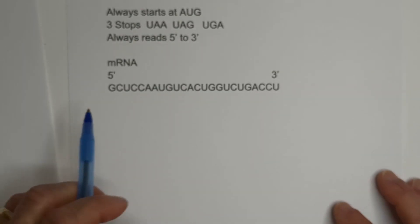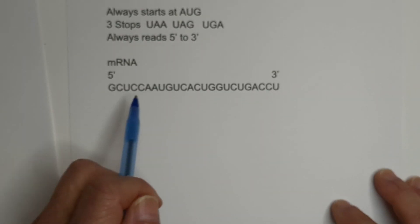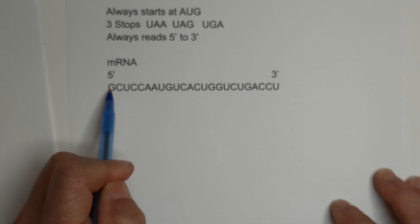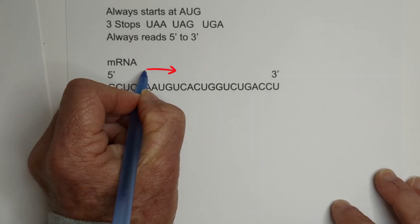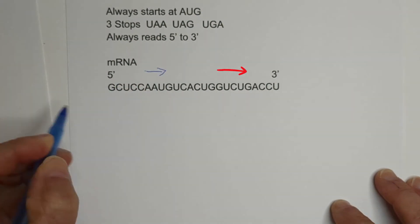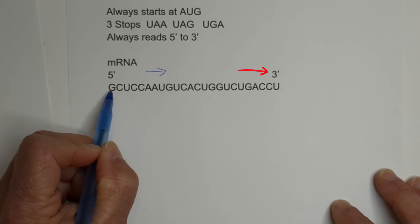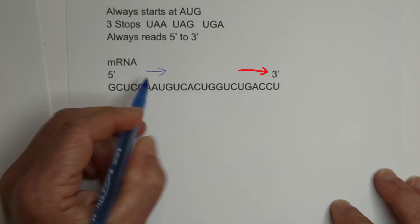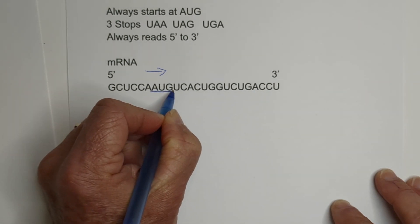Okay, so remember we start with AUG, so let's get started, and you read in triplets, and we're going from 5 to 3, so this direction. So we have GCU, no, no start yet, no start. So our start is right here,